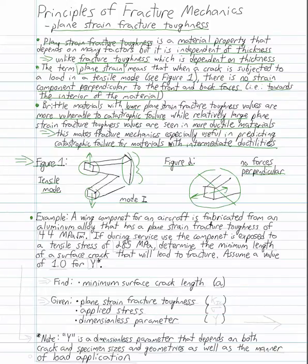Example problem. A wing component for an aircraft is fabricated from an aluminum alloy that has a plane strain fracture toughness of 44 MPa square root meters. If during surface use the component is exposed to a tensile stress of 285 MPa, determine the minimum length of a surface crack that will lead to fracture. Assume a value of 1.0 for Y.